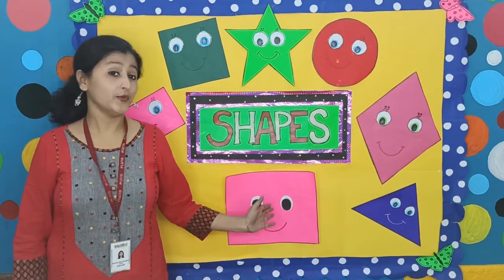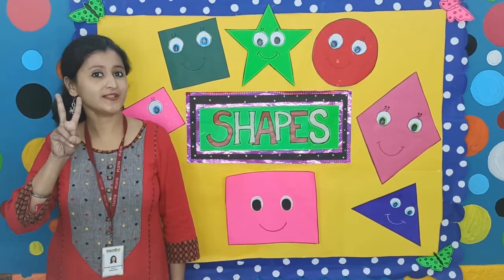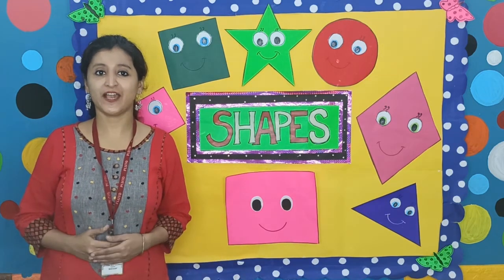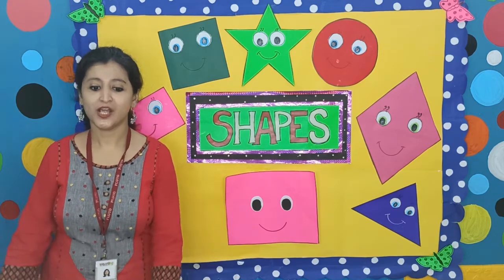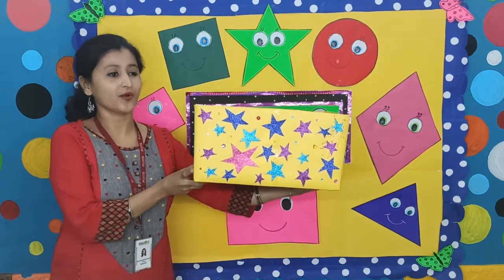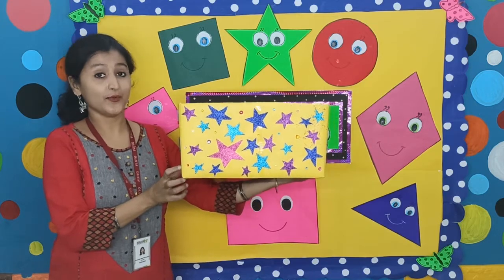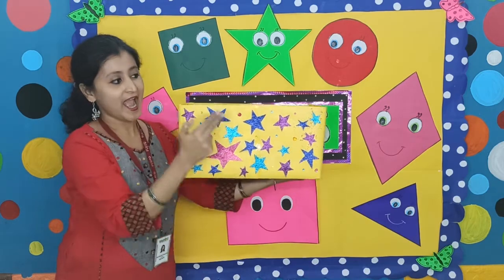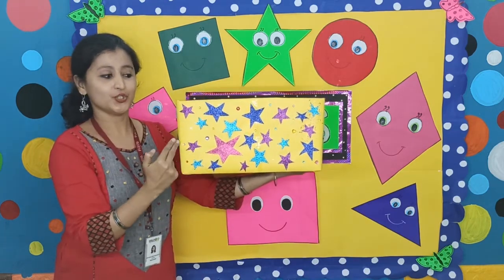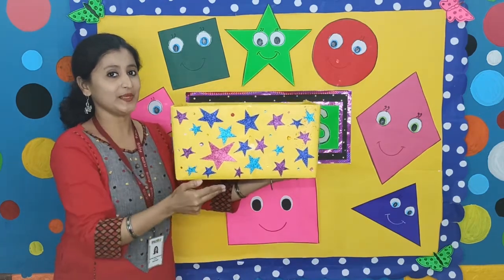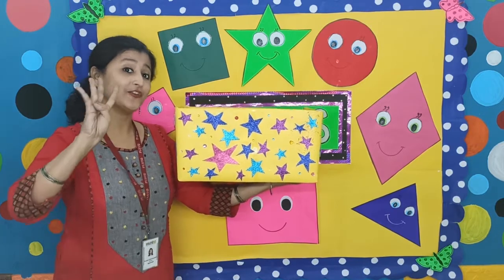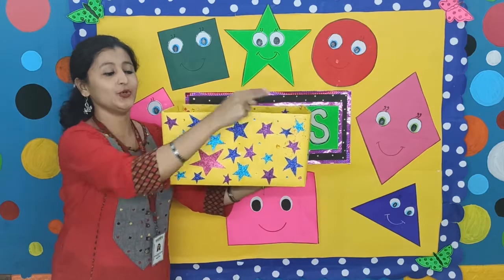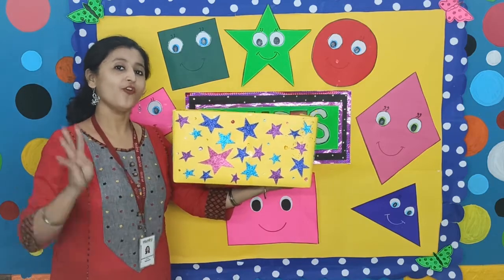Do you know? Ricky the Rectangle has two friends. Do you want to meet them? Okay, let us find who are the friends. Look, this is a rectangular box. The shape is rectangle. Let us count the sides: two small sides and two big sides. And look, there are four corners: one, two, three, four. Four corners.